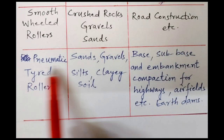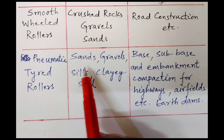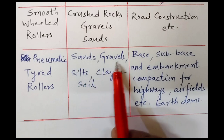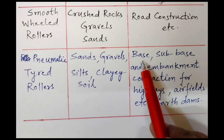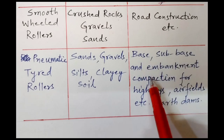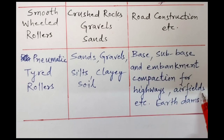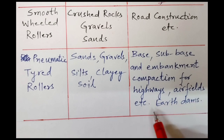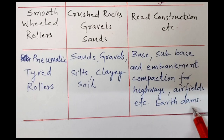The pneumatic tire roller is used for sand, gravel, silt, and clayey soils. It is used for base, subbase, and embankment compaction for highways, airfields, etc. It is also suitable for earth dam compaction.